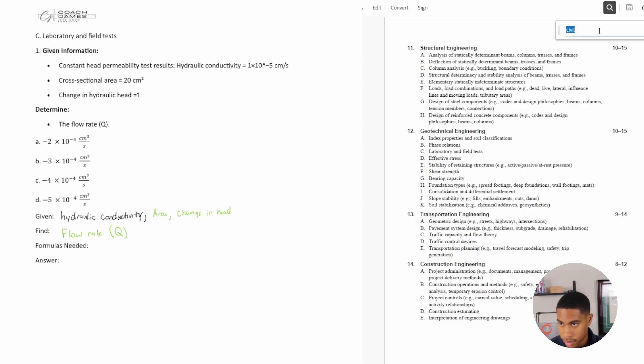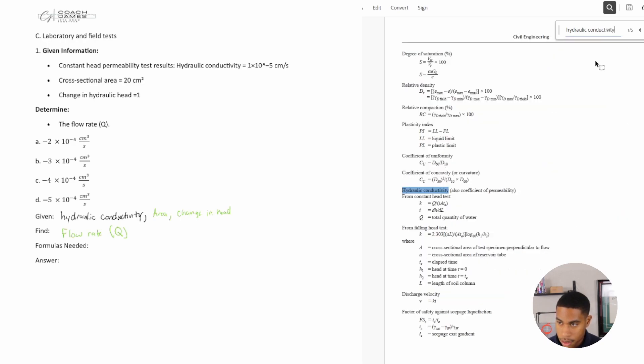Any formulas needed? If I search flow, I get 278 results, so I'm going to try to use something that they gave me to narrow down the formulas I can choose from. I'm going to search hydraulic conductivity, and only five results come up. So I'm going to see if that's a variable that I can use.